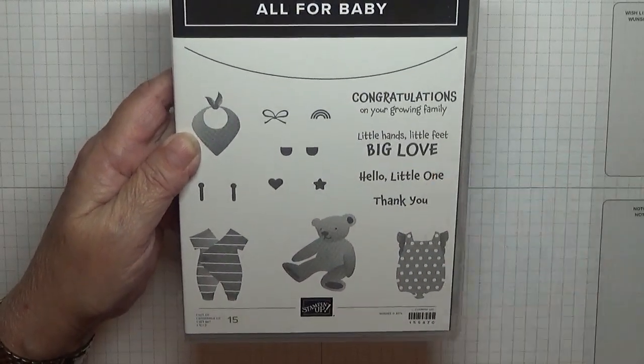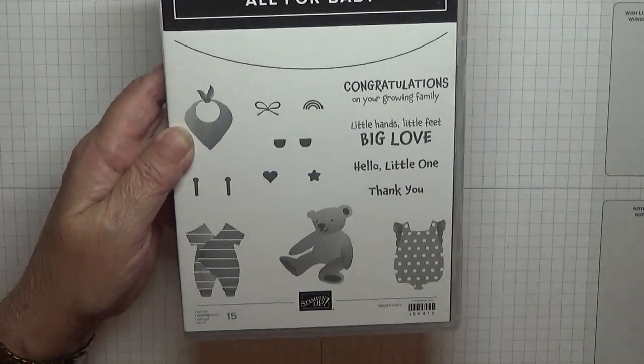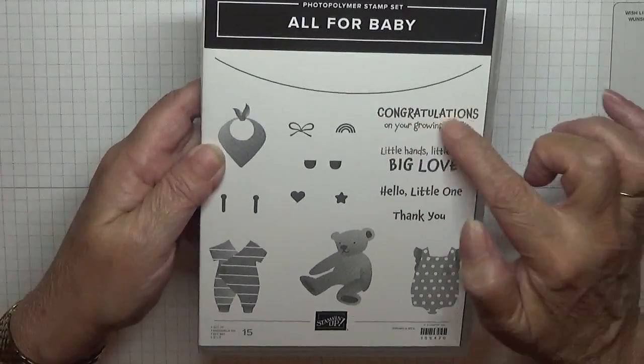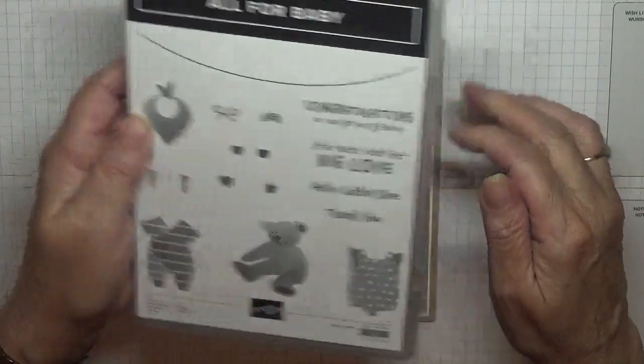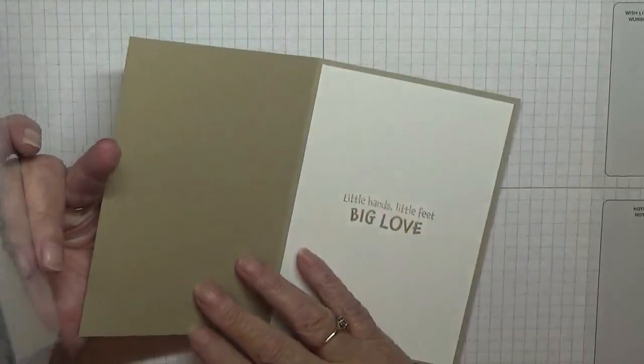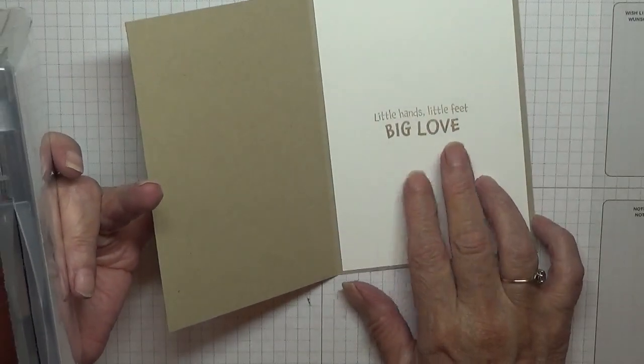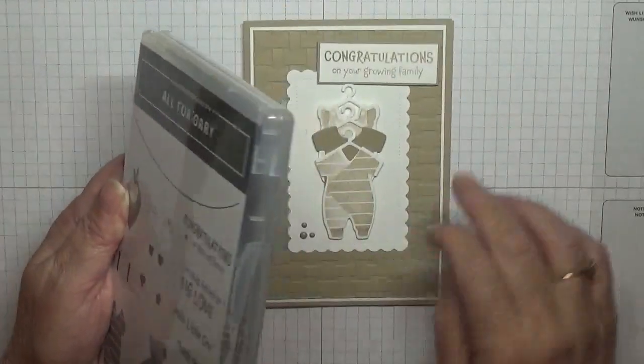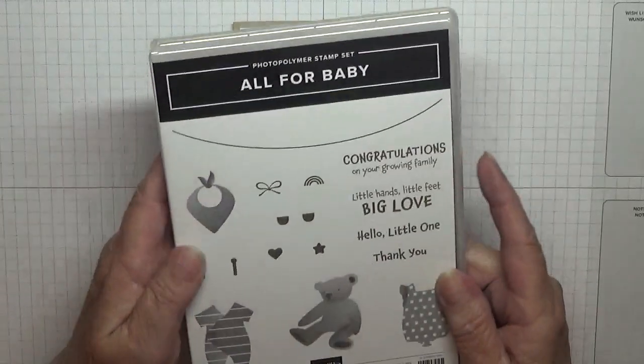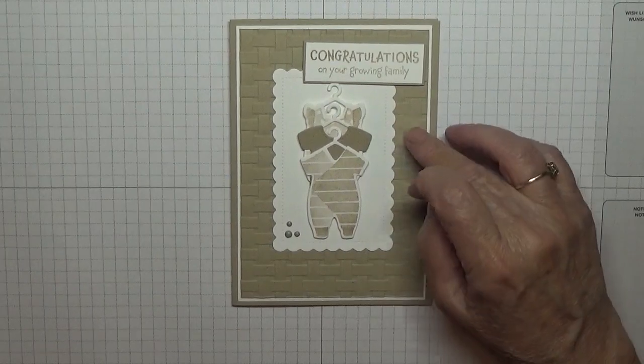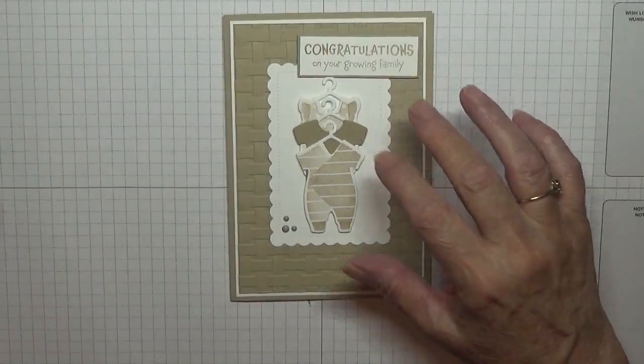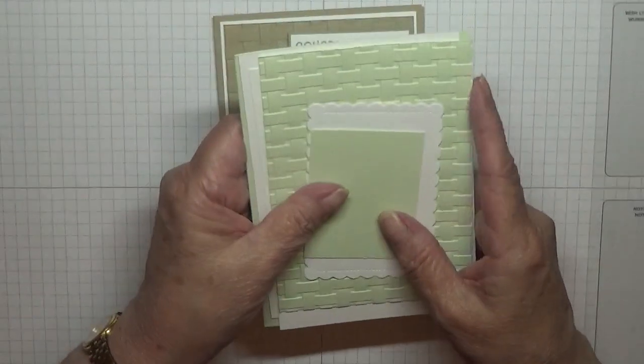I think I'm going to change the sentiment to 'hello little one' on the front and 'congratulations on your growing family' on the inside, because I did 'little hands, little feet, big love' on the inside and I think that should be on the inside. So that's what we're going to do. I'm changing the color. I did this color because it's neutral and I'm going to do another neutral using soft seafoam.